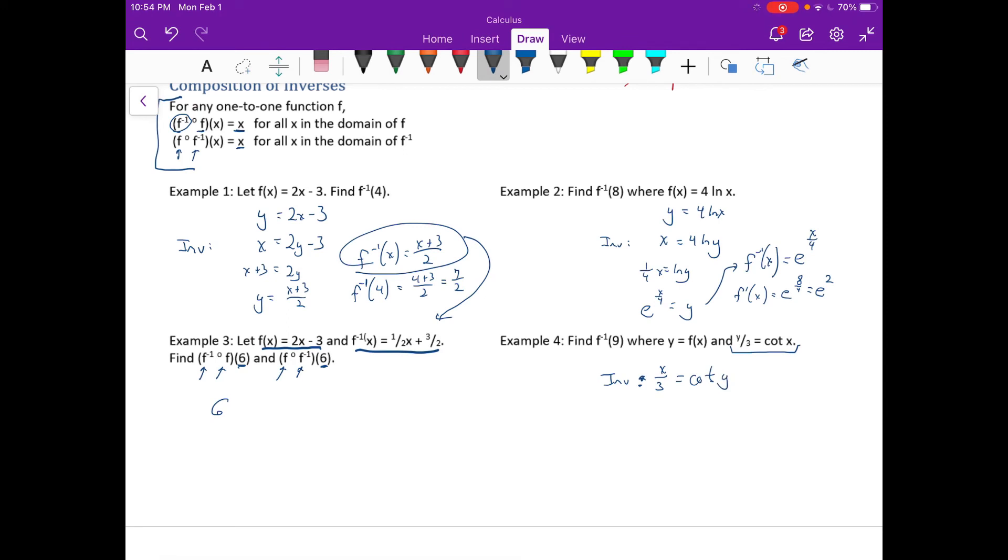So our inverse is going to be x over 3 equals the cotangent of y. Well, when the cotangent of y equals x over 3, that means there's a triangle where y is the angle, and the cotangent is x over 3, so cotangent is adjacent over opposite.